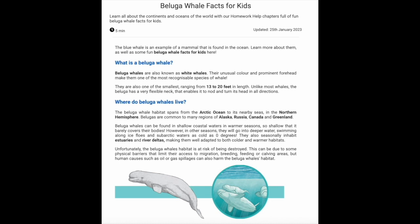Where do beluga whales live? The beluga whale habitat spans from the Arctic Ocean to its nearby seas in the Northern Hemisphere. Belugas are common to many regions of Alaska, Russia, Canada, and Greenland. Beluga whales can be found in shallow coastal waters in warmer seasons, so shallow that it barely covers their bodies. However, in other seasons, they will go into deeper water, swimming along ice flows and sub-arctic waters as cold as zero degrees. They also seasonally inhabit estuaries and river deltas, making them well adapted to both colder and warmer habitats.